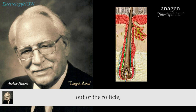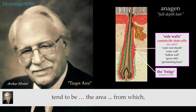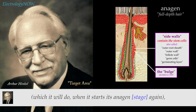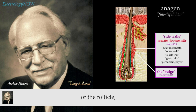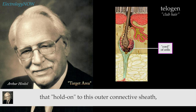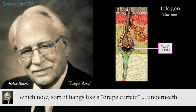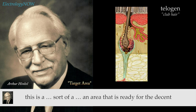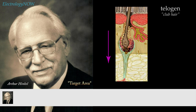In the process of the hair growing up and out of the follicle, the sidewalls of the follicle are the area from which, when the hair begins its rebirth in anagen again, regeneration starts. The cells in the outer walls go through a degenerative phase, and all but a few disappear, so that what was a full-length follicle becomes a shorter structure with a little peg underneath — containing the remnants of the old sidewalls. A cord of cells, almost invisible, holds on to the outer connective sheath, which hangs like a draped curtain underneath, ready for the descent of the follicle when it decides to rebuild.